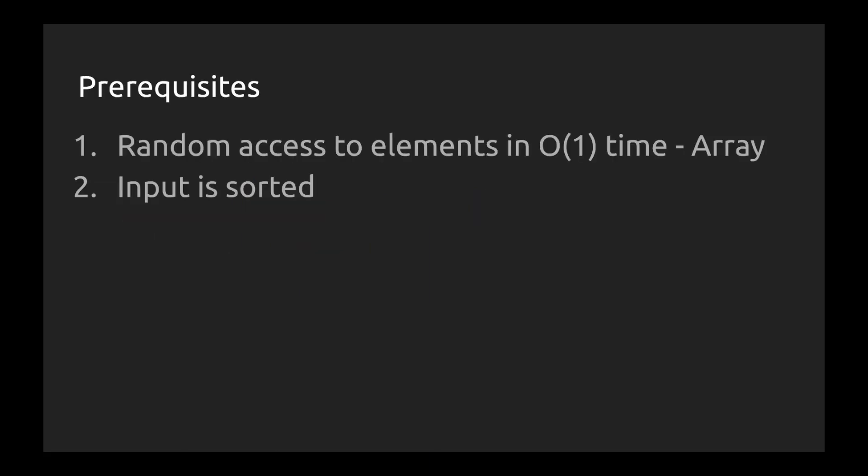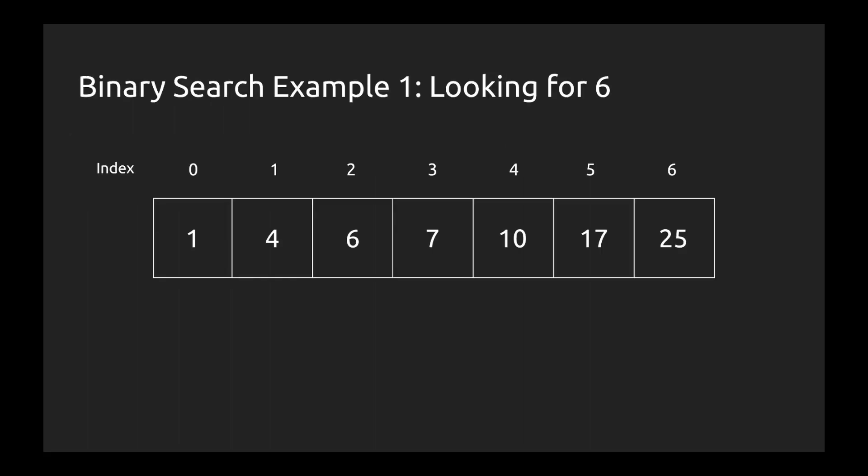Binary search is a better way of going about this, but there are two main prerequisites. First, you need random access to elements in O(1) time — a great data structure for this is an array. Second, your input needs to be sorted. And we're going to go through an example right now to show you why we need a sorted input. So let's take this example — we once again have an array of seven elements, this time it's sorted, and we're going to be looking for the value 6.